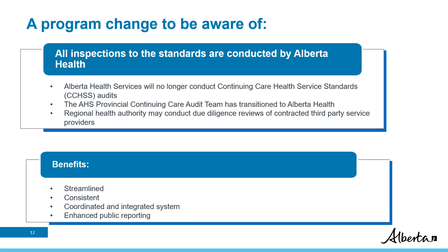There are two high-level changes that operators and providers should be aware of. First, Alberta Health will now conduct all inspections. Please note that while the Continuing Care Health Service Standards are not currently enforced in publicly funded Hospice Settings — Type C Continuing Care Homes — operators may still have some contract monitoring expectations from the Regional Health Authority. Second, Continuing Care Home and Supportive Living Accommodation operators and home and community care providers can be inspected against the Act and regulations by Alberta Health, in addition to the applicable standards. If contraventions of the Act, regulations, and standards are identified, inspectors will work with operators or providers to resolve them.